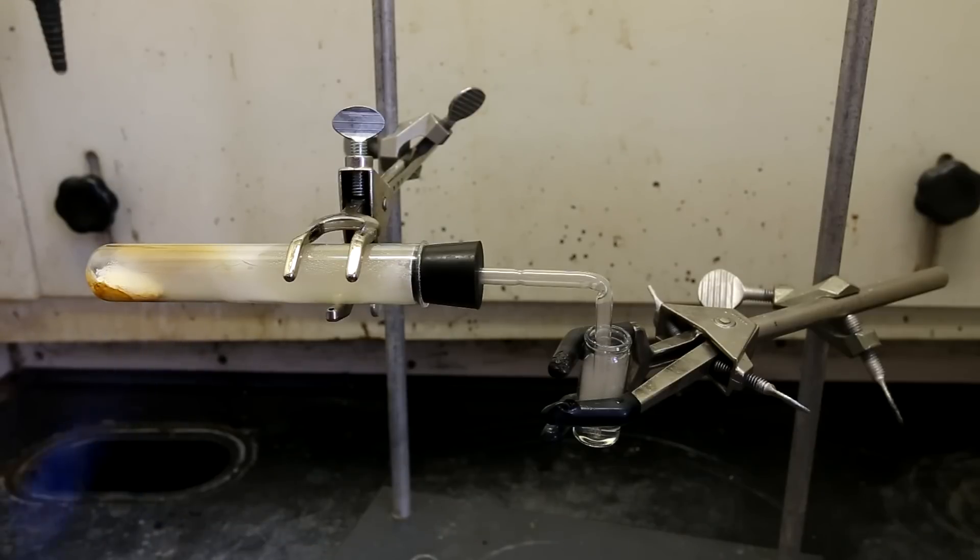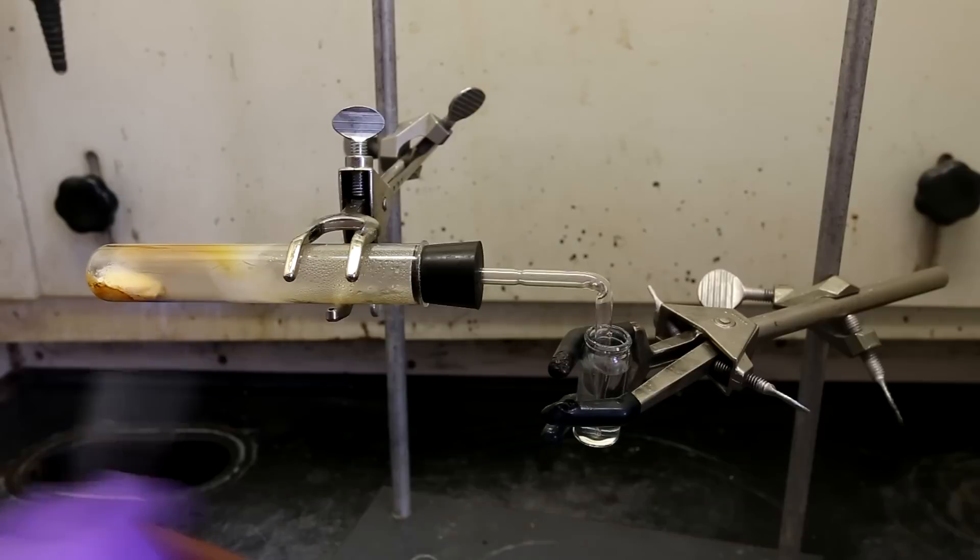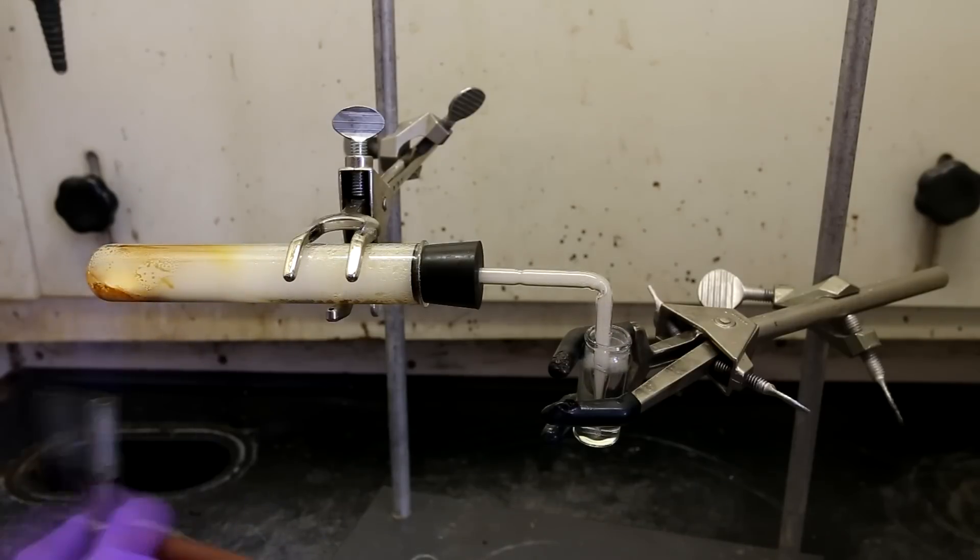It is important to use water here in the trap instead of ethanol because we are working with a flame. The water seemed a little bit low, so a bit more was added to the dram vial.